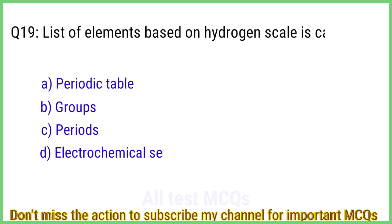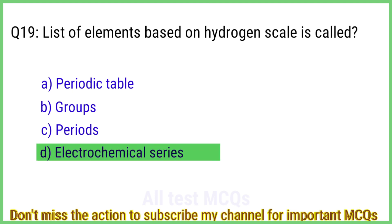Question number 19. A list of elements based on the hydrogen scale is called? The right answer is option D: Electrochemical series.